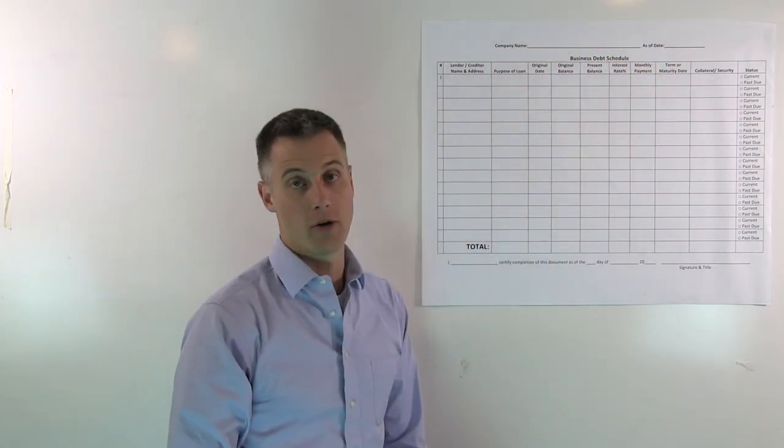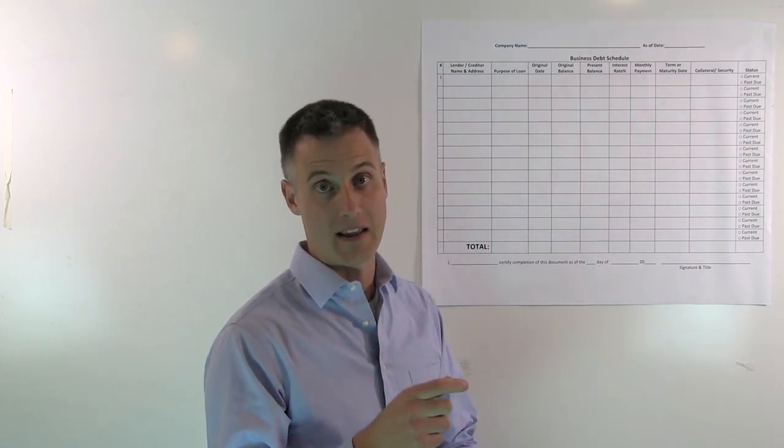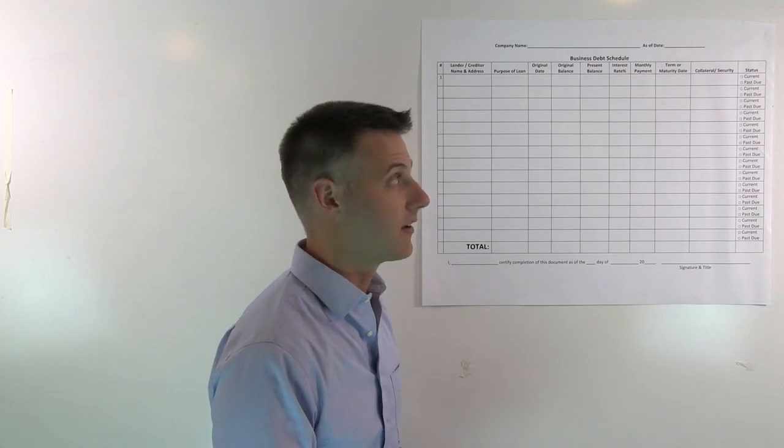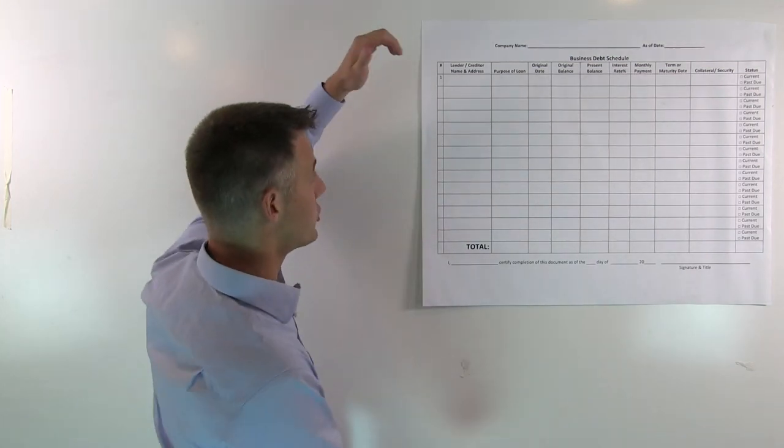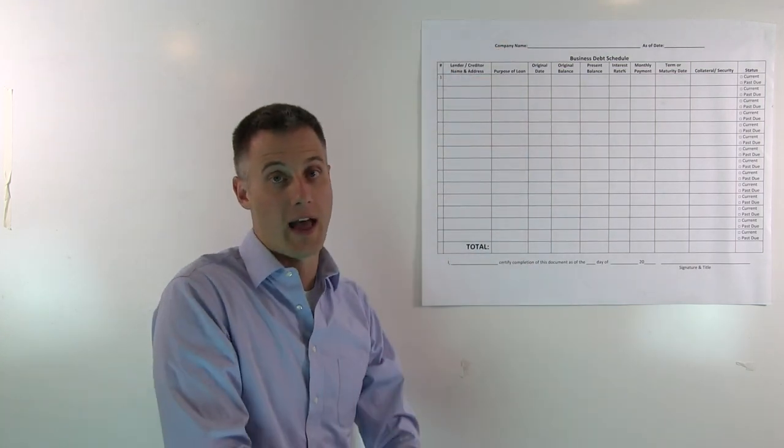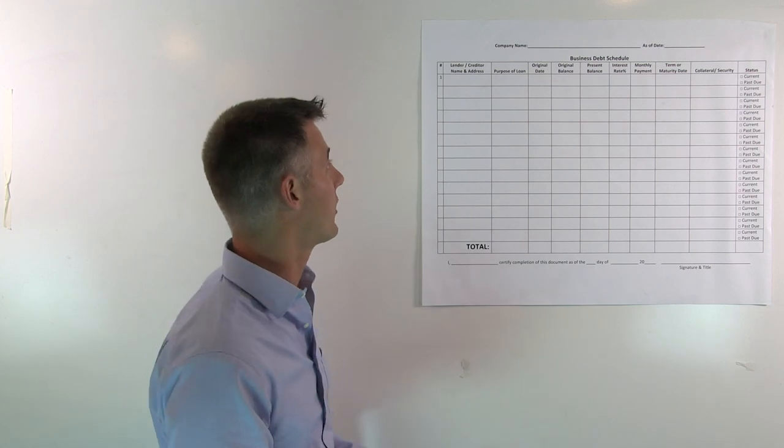The as-of date should match the profit and loss and balance sheet. That date, the date of your balance sheet you're going to give the lender. So something current, a month-end date. Make sure you list out all your debts that are to that company. Not personal debts, not to other companies, just to this company.